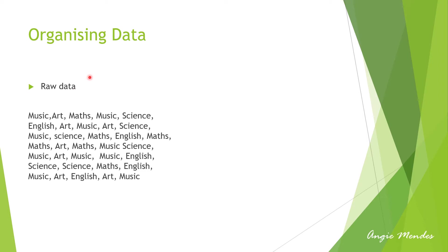In order to draw meaningful inferences or conclusions, we need to organize the data systematically. Here we have raw data in unorganized form — subjects are listed and we have to find out how many students like music, art, math, or science. Just by looking at it, that would not be easy. So in order to organize this data, we prepare a frequency distribution table.